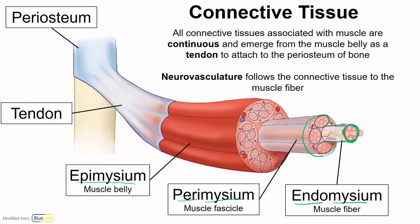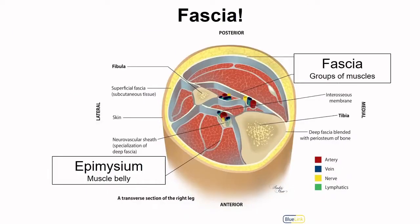The epimysium is also called muscular or deep fascia. All of this is continuous with the tendon that blends with the periosteum on the bone. The connective tissue surrounds the muscle and also provides a channel for the neurovasculature to reach each fiber. Fascia will be your favorite if you do anatomical dissection — though removing fascia will feel extremely tedious.